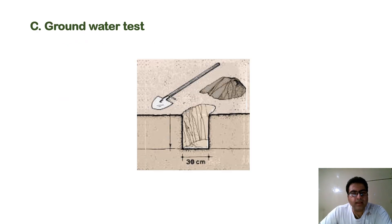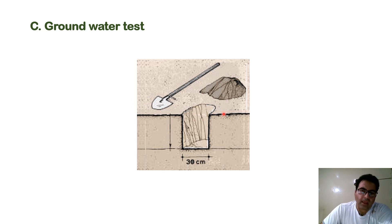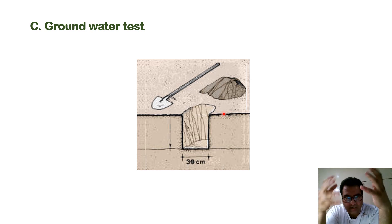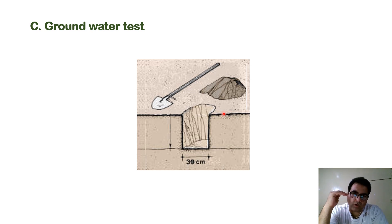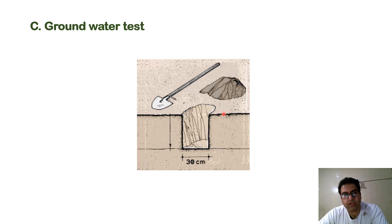The third important test is the groundwater test. We dig a hole, cover it with leaves, and leave it overnight. If the hole is filled with water the next morning, the water level is very high and it is very suitable for fish culture. However, this kind of pond where the groundwater level is very high needs a longer duration of time to be emptied if the pond needs to be drained.